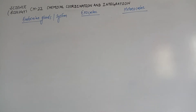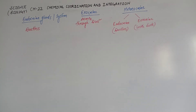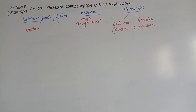तीन types हैं: endocrine, exocrine और heterocrine। Endocrine glands जो hormone secret करती हैं, वो directly blood में secret करती हैं। उस hormone के secretion के लिए कोई भी tube या duct की ज़रूरत नहीं होती — इसलिए endocrine glands ductless glands होती हैं।